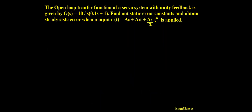Hello everyone, welcome to ng-classes YouTube channel for a video lecture series in control systems. In this video lecture we shall consider a numerical. The open loop transfer function of a servo system with unity feedback is given by G(s) = 10 / [s(0.1s + 1)]. Find out static error constants and obtain steady state error when input r = a0 + a1·t + (a2/2)·t² is applied.